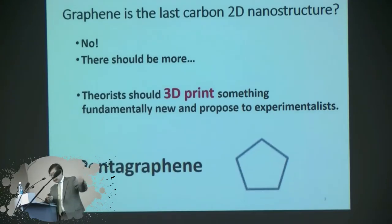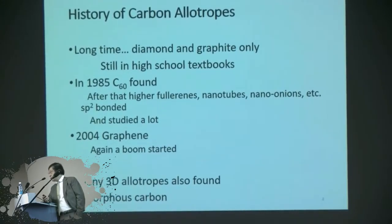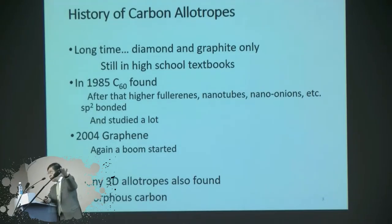Pentagraphene is composed completely by pentagons. This is a history of carbon allotropes. For a long time, still in the textbook, it is written that there are two kinds of carbon crystals: diamond and graphite, basically graphene. And this is not true. We have been searching for SP2 and SP3 partners of 3D structure of graphene. We have found the K4 nanostructure. And this pentagraphene is an SP2 and SP3 mixture having a 2D, almost 2D sheet structure of carbon.